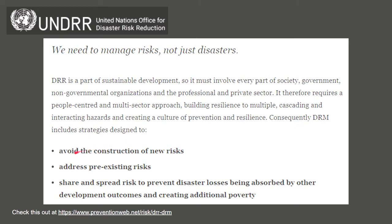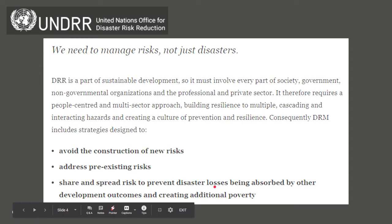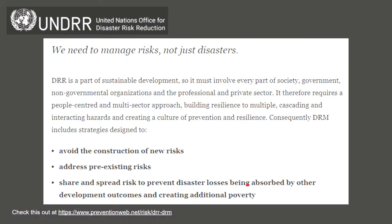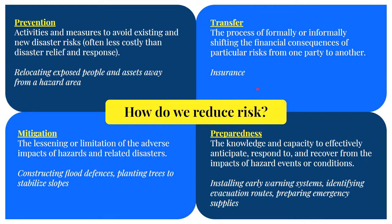Under implementation, it must involve avoidance of constructing new risk — as we progress, we should avoid creating new risk, address pre-existing risk in a community, and spread risk to prevent disaster losses and additional poverty. Poor segments of society and poor nations are more prone to impacts of natural hazards; they have lower resilience but higher exposure and vulnerability to hazards.